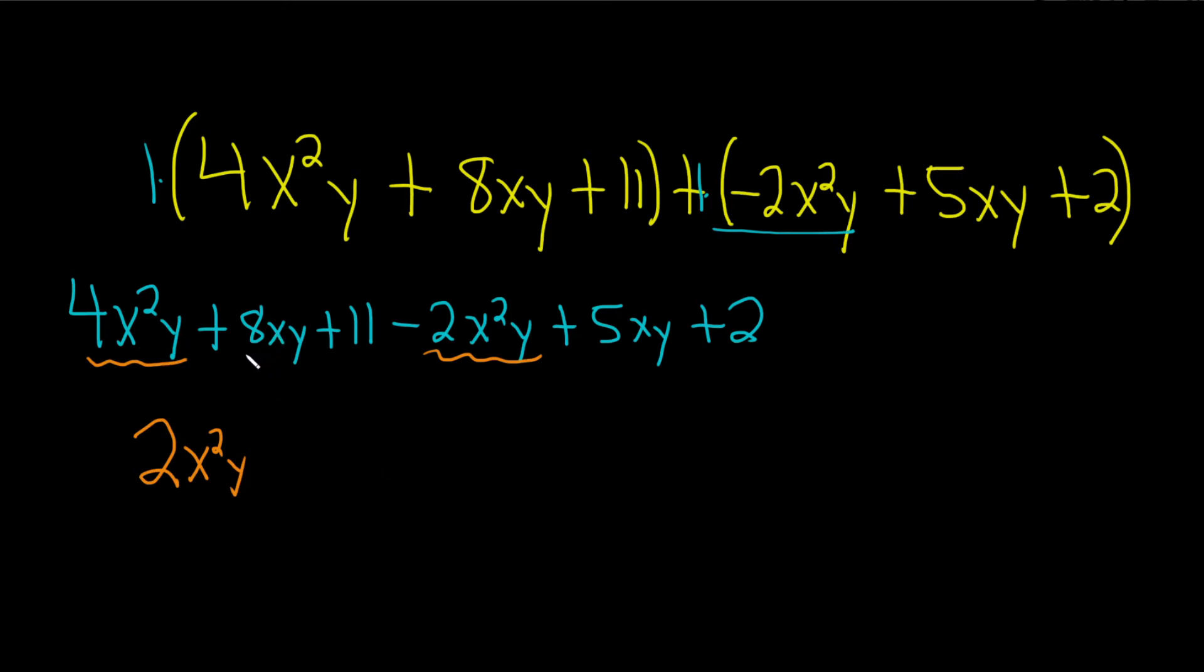Let's do the xy one now. So 8xy plus 5xy is 13xy. You see, you're just basically adding the numbers and keeping the variables there. The last part is the easiest part, maybe. 11 plus 2 is 13. And that's it. That's the final answer.